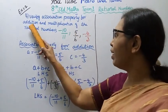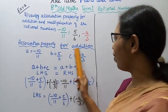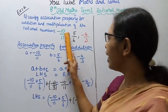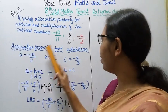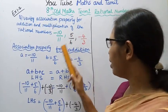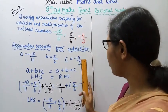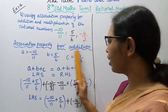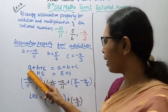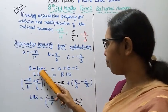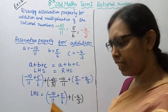First, associative property for addition. A is minus 10 by 11, B is 5 by 6, C is minus 4 by 3. For addition, the formula to verify is: A plus (B plus C) equal to (A plus B) plus C.